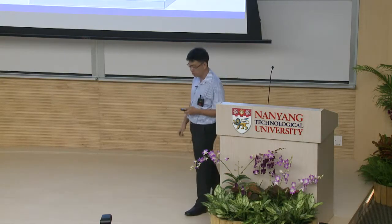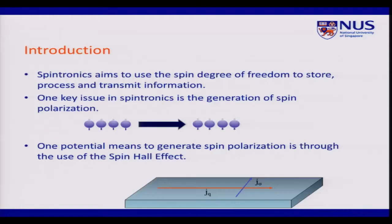My group is actually working in the field of spintronics. In spintronics, what we aim to do is to make use of the spin degree of freedom of charge carriers. In conventional electronics, we make use of the charge degree of freedom of electrons and holes. Here, instead of moving charges, we make use of spin to store information, to process information, and to transmit information.